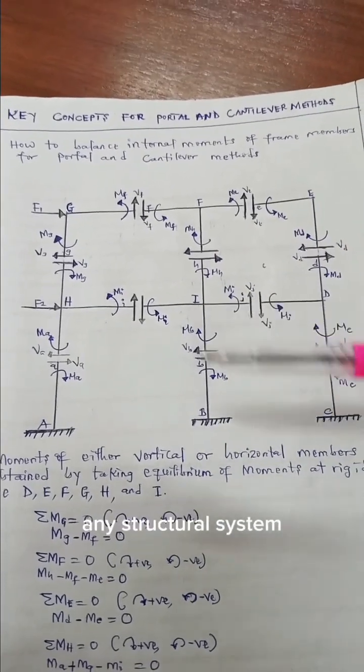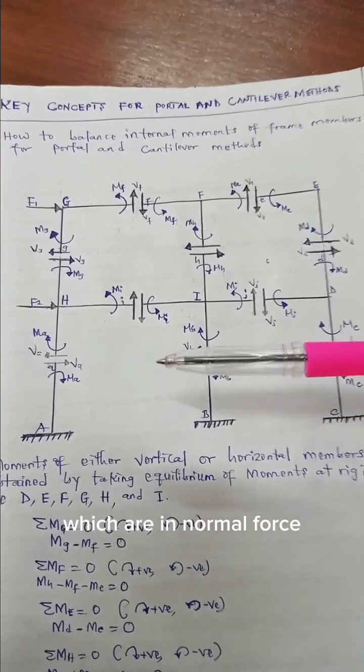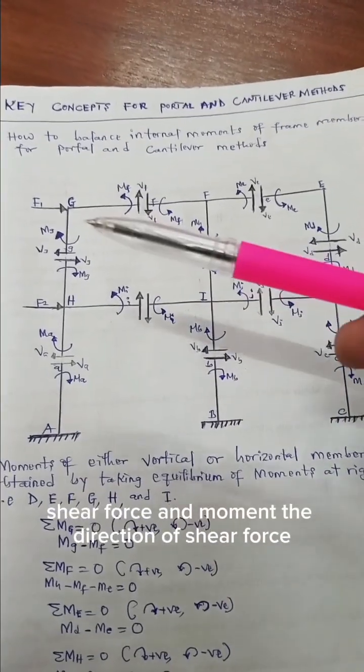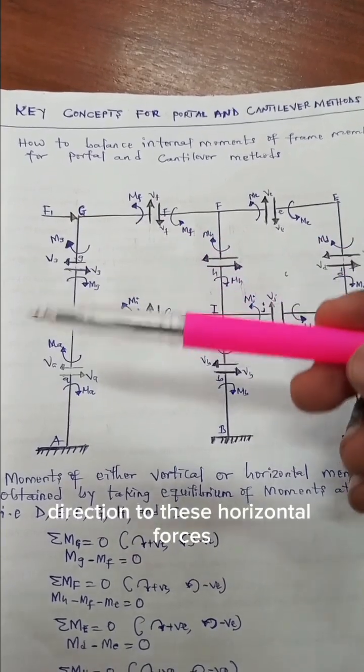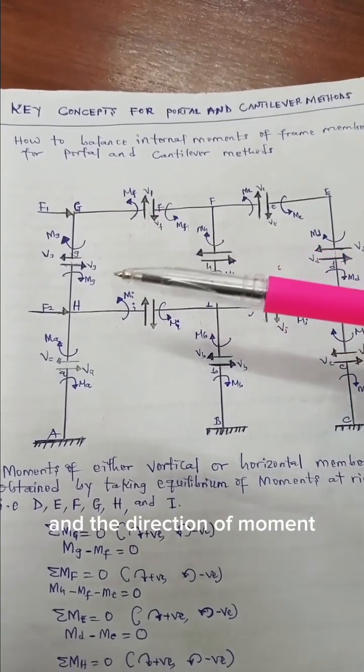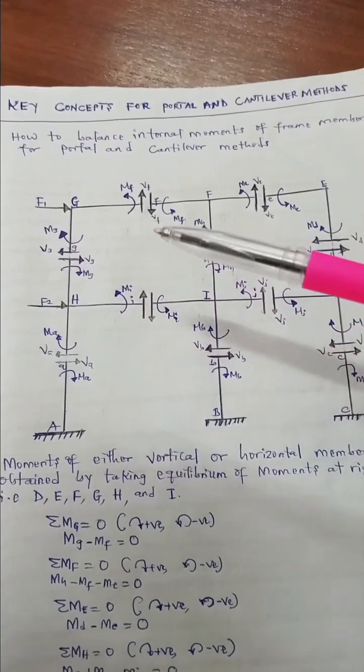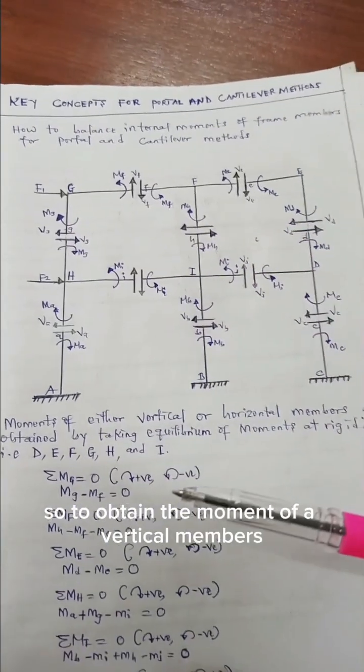In a structural system when you cut, internal forces are produced which are normal force, shear force, and moment. The direction of shear force is always in opposition to these horizontal forces, and the direction of moment is in the same direction to that of shear force.